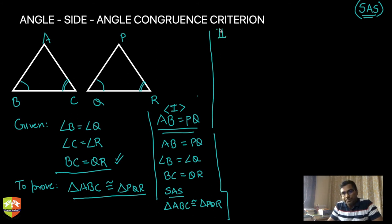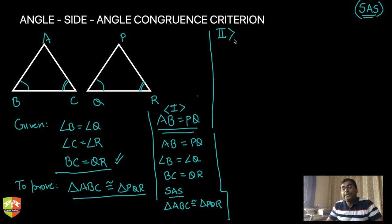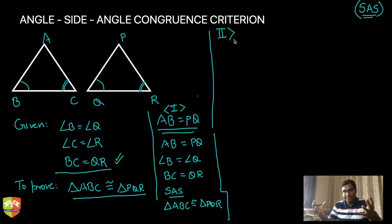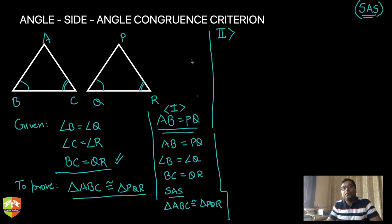Case 1: AB is equal to PQ. Then in the two triangles, AB equals PQ, angle B equals angle Q, and BC equals QR — so by SAS we can say triangle ABC is congruent to triangle PQR. That's straightforward. But you can ask: how do we know AB equals PQ? We don't — so let's examine the other conditions.